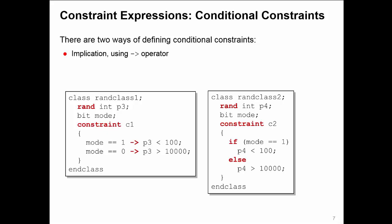This allows us to say, in this example, if mode is equal to 1, the constraint on P3 is less than 100. But if mode equals 0, the constraint is P3 is greater than 10,000. The other form uses an if-else statement, although the else part is optional. This pretty much does the same thing.